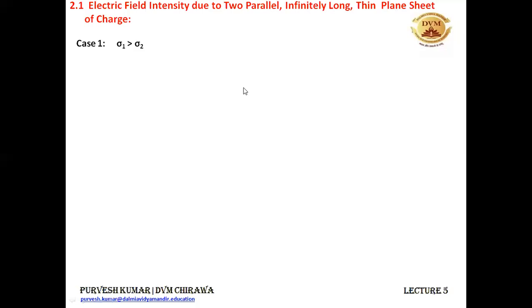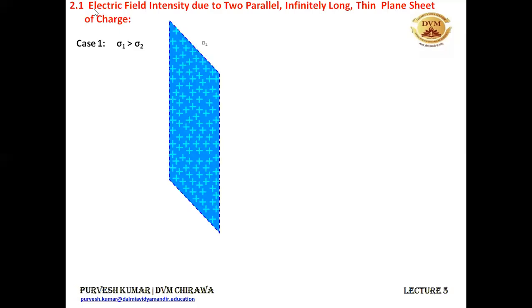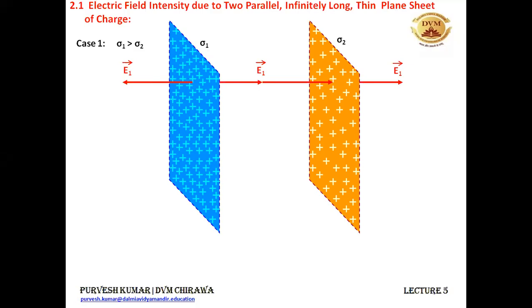A student asked to repeat case 1. In case 1 we have two positively charged sheets with surface charge densities sigma 1 and sigma 2. The first sheet has surface charge density sigma 1, with electric field lines E1 coming out from it. The second positively charged sheet has surface charge density sigma 2, and its electric field lines are also coming outward from it.